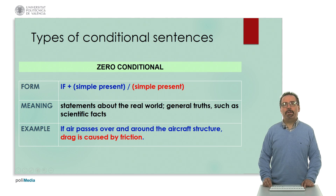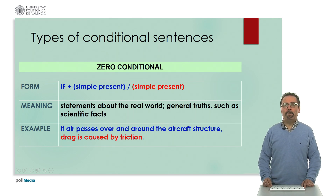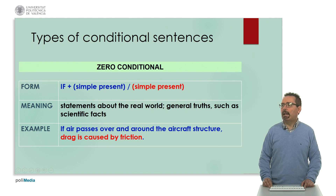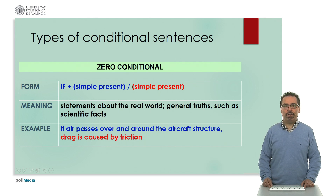We will now look at the types of conditional sentences in English. We start with the so-called zero conditional, where we have 'if' plus simple present and in the other part of the sentence another simple present. It is used for things that are normal or true in the real world and for general truths such as scientific facts. For example: 'If air passes over and around the aircraft structure, drag is caused by friction.'